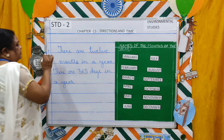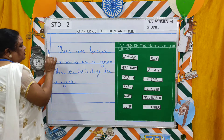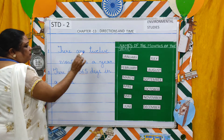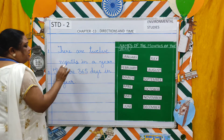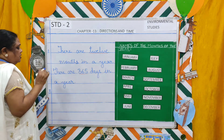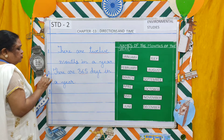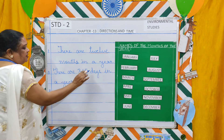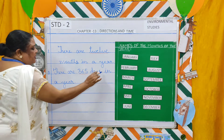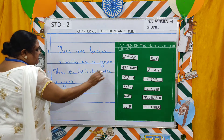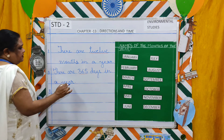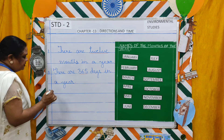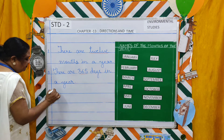Number 1: there are 12 months in a year. Number 2: there are 365 days in a year.